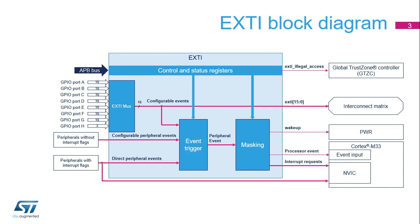Do not confuse peripheral events and the processor event. Peripheral events are used by peripherals to indicate that they require processor attention. The processor event is a pulse signal used by ARM CPUs to exit the wait-for-event low-power state.